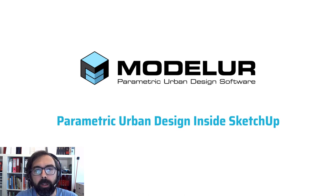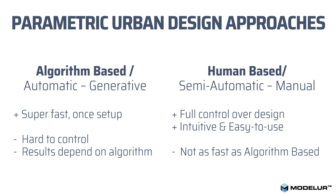Before digging into the topic of parametric urban design inside SketchUp, I want to quickly shed some light on parametric urban design itself. As you can see in this image, there are two basic approaches. One is algorithm-based, meaning that the final results are completely calculated by computers based on algorithms that humans provide — we sometimes call this generative design. On the other hand, we have a human-based approach, which is semi-automatic, where the computer only assists humans in working more efficiently.